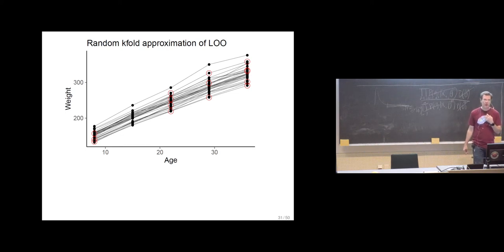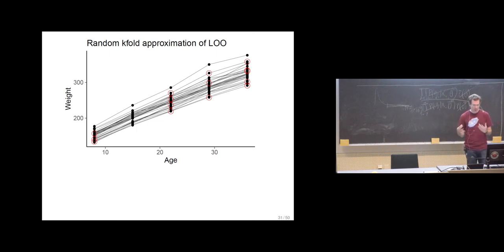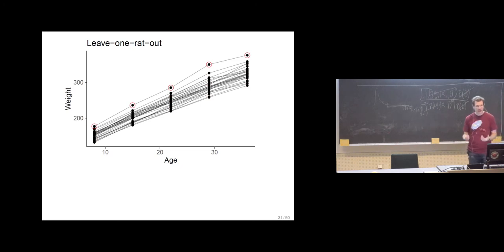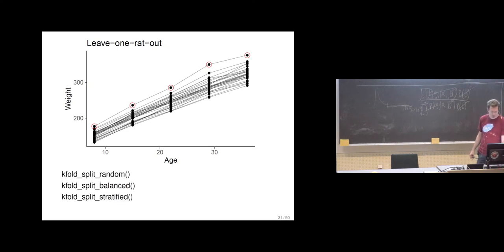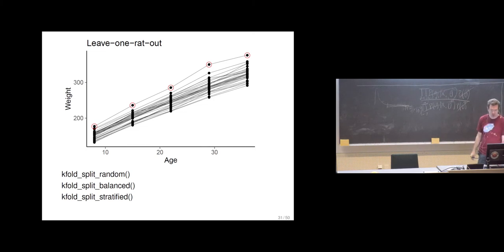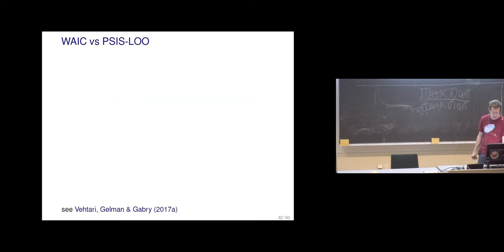If you think about the rat example, where we had a growth curve for different rats: if we want to do something similar to leave-one-out, we could just randomly drop any observations without considering the structure. Or we could take the structure into account — leave one rat out, or leave several rats out. There are functions which help with these different structures, making these kinds of index sets specifying what is left out and what is used to fit the model.